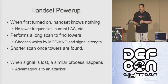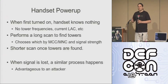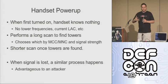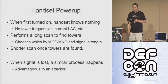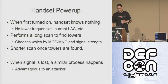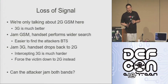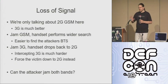An attacker can use this to his advantage: if you DOS the cell phone system to make people lose signal, when those handsets connect back up again they're going to perform a much wider band scan and have a much higher chance of connecting to the attacker's tower. Now, we're only talking about second generation GSM — 2G. 3G has much, much better security.